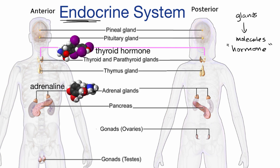You have hormones like adrenaline, which are released by the adrenal glands — that's where it gets the name adrenaline from. It's often known as epinephrine. You might hear about someone being an 'adrenaline junkie,' meaning they really like a thrill. Adrenaline does play a role there — it's involved in the fight-or-flight response, where it increases your heart rate and increases blood flow to the muscles.